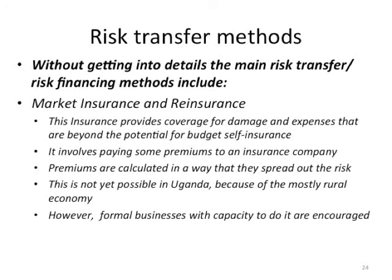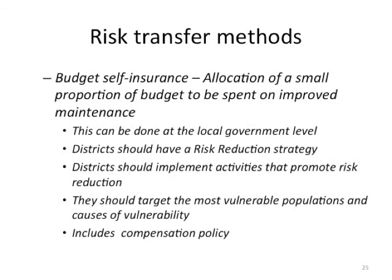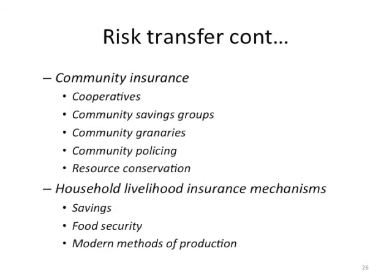Risk transfer mechanisms also include budget self-insurance, where a small proportion of the budget is allocated for improved maintenance — at local government, agency, and even household level. They also include compensation policies targeting the most vulnerable populations and causes of vulnerability. Community insurance includes cooperatives, community savings groups, community granaries, community policy, and resource conservation — a viable mechanism in resource-constrained countries. Household livelihood insurance mechanisms include savings, food security, proper settlement, and modern methods of production.